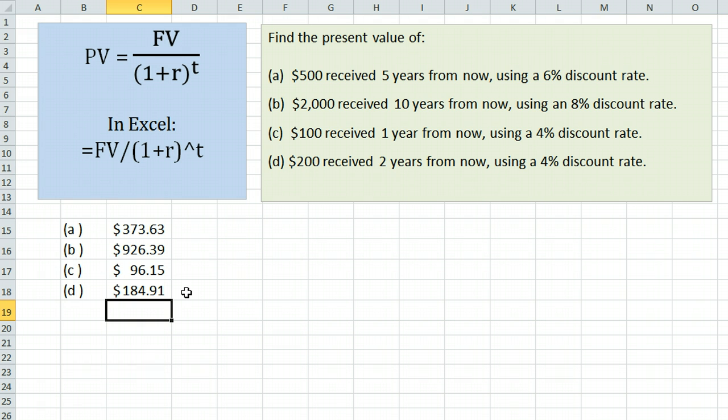The one other thing I wanted to point out is that if you have a problem where, for example, you are going to receive $100 one year from now and $200 two years from now using a 4% discount rate, you can do the two problems separately like we have here, and then you would add up the results to figure out the present value of that investment.